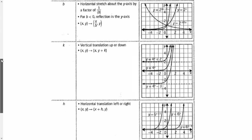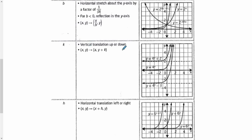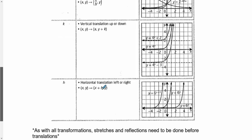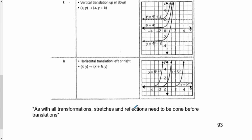The k deals with vertical translation up and down — plus 2 means up 2, minus 3 means down 3. Whereas h talks about left and right, but it's always the opposite on the inside. For example, 6 to the power of x plus 2 — that plus 2 means it's moved left 2 units. With x minus 3, it has moved right 3. As with all transformations, stretches and reflections need to be done before translations. The a's and b's have to happen before the h's and k's.